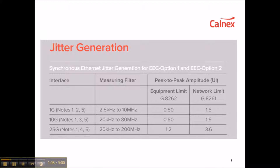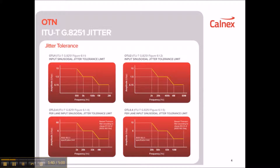This table shows the output Jitter limits for SyncE. Jitters are always measured within the specified bandwidth with the high-pass and low-pass filters given in column 2. 1GbE Jitter is measured up to 10MHz with an equipment limit of 0.5 UI peak-to-peak and a corresponding network limit of 1.5 UI peak-to-peak. 10GbE Jitter is measured from 20kHz to 80MHz, with an equipment limit of 0.5 UI and a network limit of 1.5 UI. 25GbE Jitter is measured to 200MHz, with an equipment limit of 1.2 UI peak-to-peak and a network limit of 3.6 UI peak-to-peak.